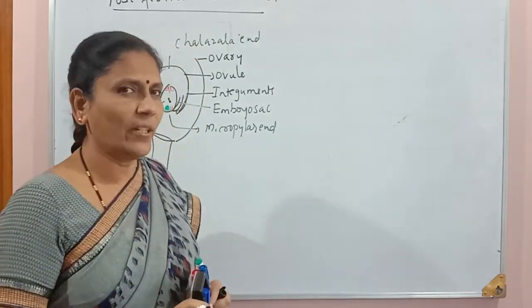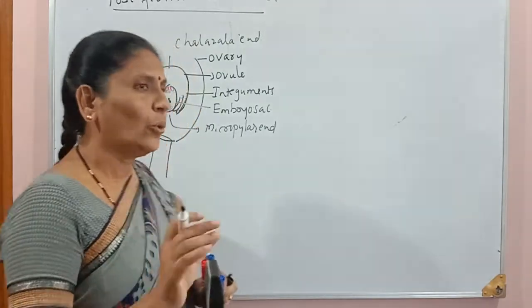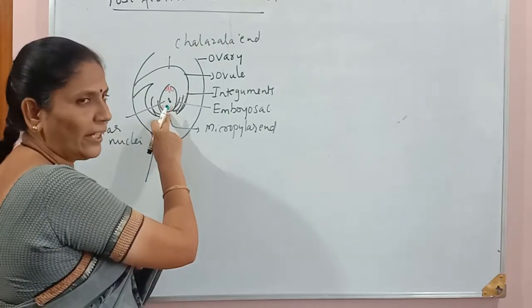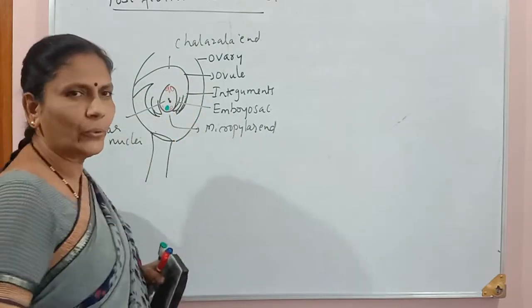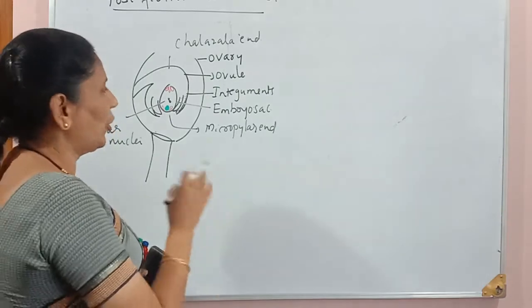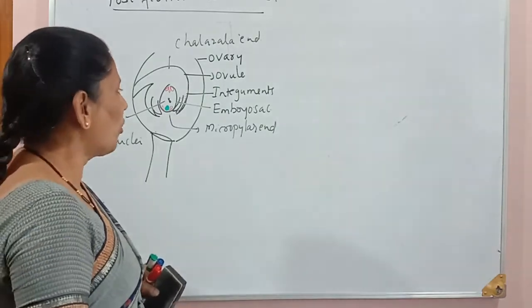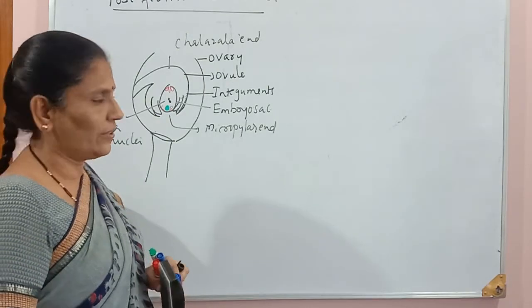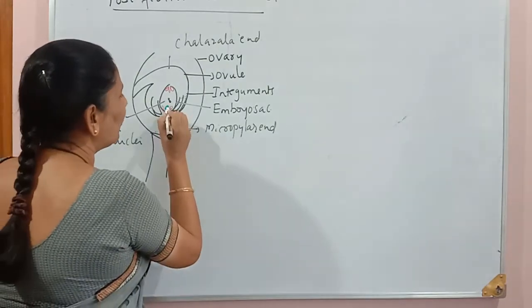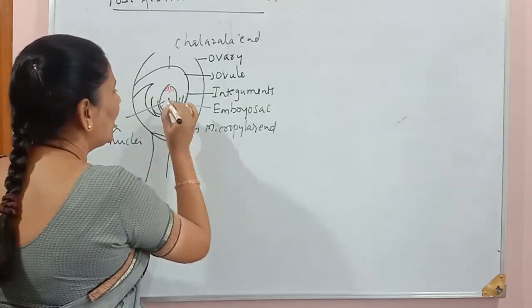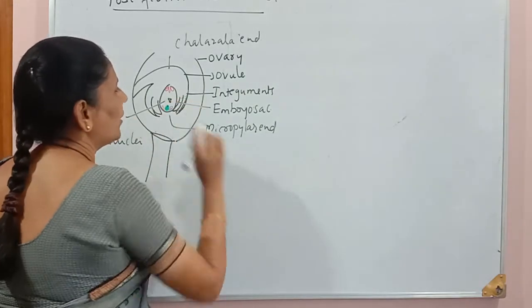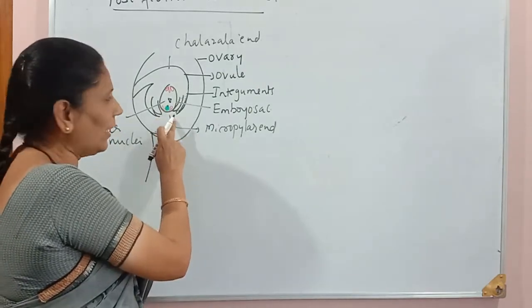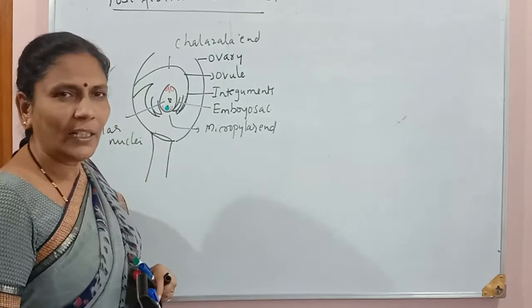After fertilization, two male gametes enter the embryo sac through the micropylar end — most commonly the pollen tube enters through the micropylar end. One male gamete fuses with the egg cell, and another male gamete fuses with the two polar nuclei. This first fusion we call syngamy, and the second we call triple fusion.